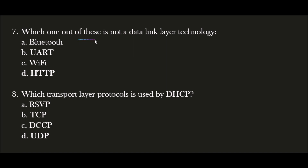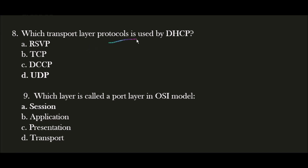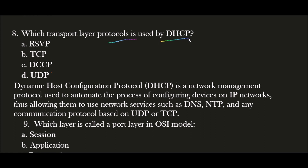Next question: Which one is not a data link layer technology? The correct answer is option D — HTTP. HTTP is not a data link layer technology; it is a protocol for hypertext transfers. Next question: Which transport layer protocol is used by DHCP? The correct answer is option D — UDP. DHCP stands for Dynamic Host Configuration Protocol, a network management protocol used to automate device configuration on IP networks, supporting DNS, NTP, and communication protocols based on UDP and TCP. UDP stands for User Datagram Protocol and TCP stands for Transmission Control Protocol.